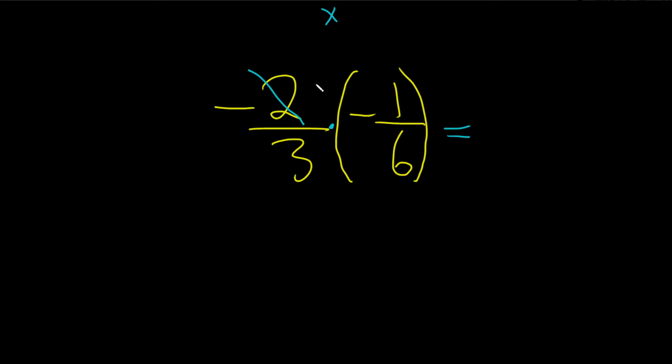So I'll put a line through the 2 and put a 1 here because 2 goes into 2 one time. Likewise, 2 goes into 6 three times. So you put a line here and then you put a 3 here like this.